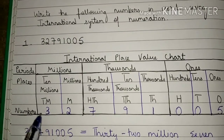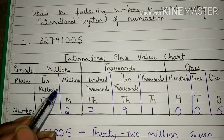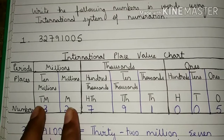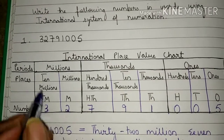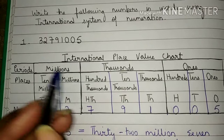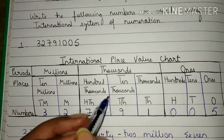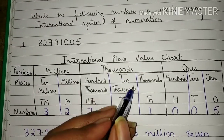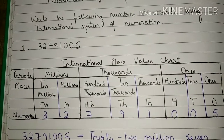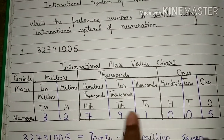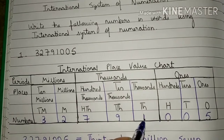Now look here. Two is in millions place and three is in ten millions place, so we will read these two digits together as 32 million. Here one is in thousands place, nine is in ten thousands place, and seven is in hundred thousands place, so we will read these three digits together as 791 thousand.